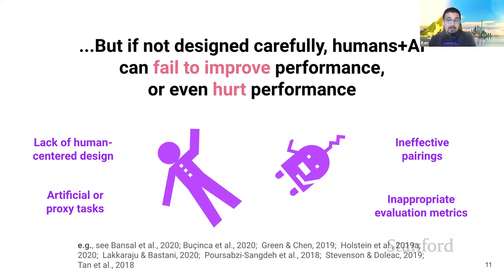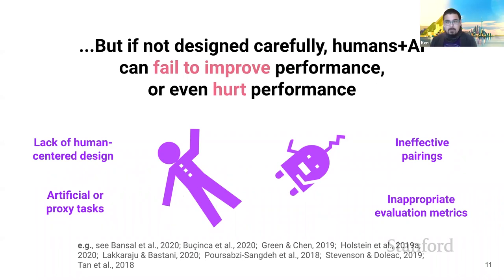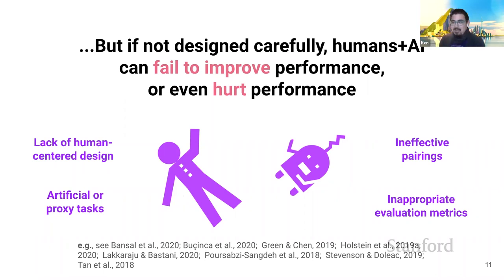So why do some human-AI partnerships succeed while others fail? Oftentimes it's a simple lack of human-centered design. For example, a partnership might fail when humans can't understand what the AI system is telling them. Other times it might be ineffective pairing — many null or negative results in this area have come from studies on crowdsourcing platforms, like Amazon's Mechanical Turk, where crowd workers might be assigned to assist an AI on tasks that truly require expert-level domain knowledge, which we wouldn't expect an average crowd worker to have.